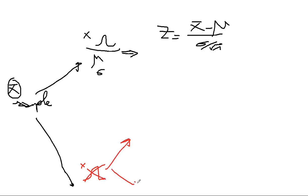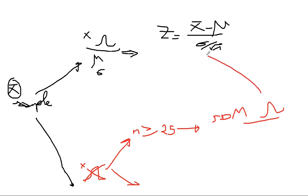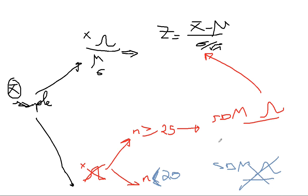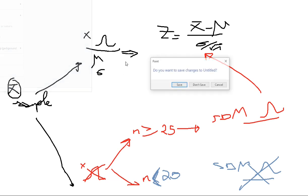Scenario two: if the sample is coming from a distribution where X does not have a normal distribution, you have two possibilities. The first possibility is that your sample size is greater than or equal to 25. If so, due to the central limit theorem, the sampling distribution of the mean has a normal distribution and you can use the Z. If your sample size is strictly less than 25, the central limit theorem does not apply, the sampling distribution of the mean does not have a normal distribution, and therefore you cannot calculate the probability.